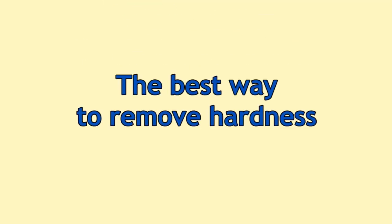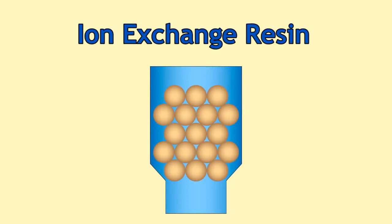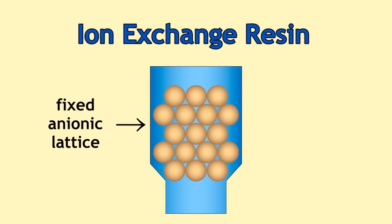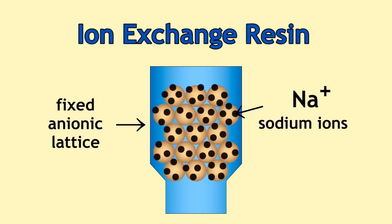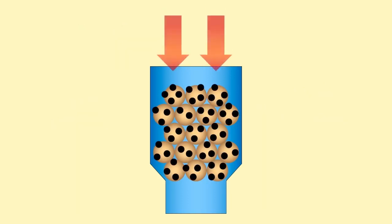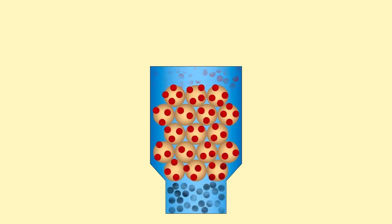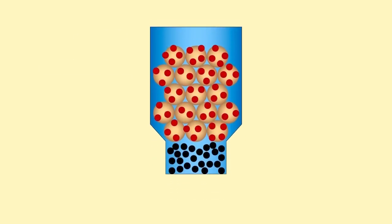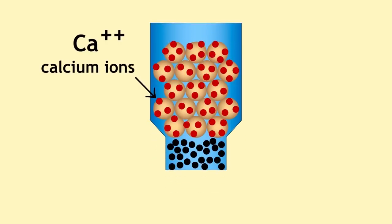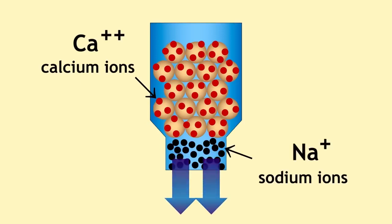The best way to remove hardness is actually to use something called an ion exchange resin. These have a fixed anionic lattice, a bit like clay, initially balanced by positive sodium ions. As hard water flows through, the calcium ions are exchanged for the sodium ions, so that the calcium ions stick to the clay and the sodium ions come out into the water. In this way, the water is softened because the calcium is no longer there.